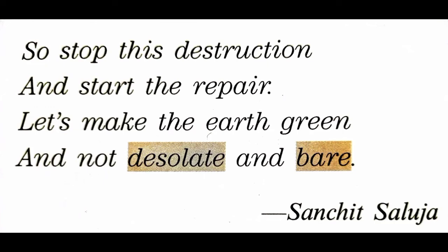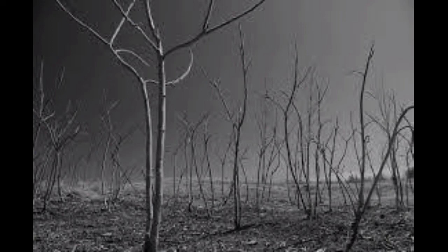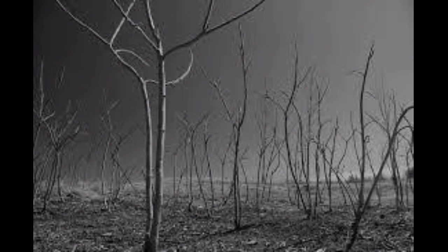So stop this destruction and start the repair. The poet is requesting us to stop all these destructions — these kinds of activities which are destroying our environment — and start repairing. How can we repair our environment or our nature? By planting more and more trees. He is saying let's make the earth green, and not desolate and bare. Desolate means barren or empty, and bare means without any trees. This is a request to stop all activities that are destroying our environment.